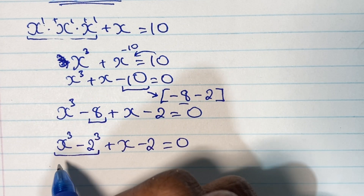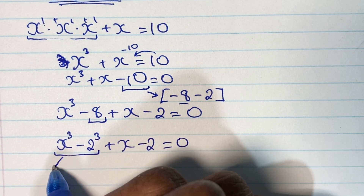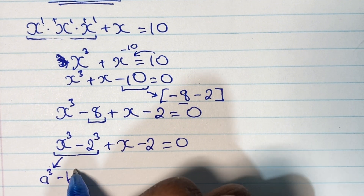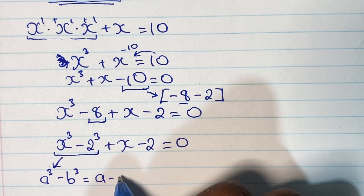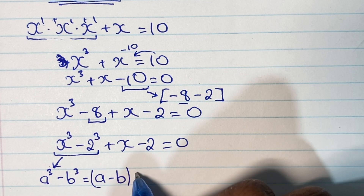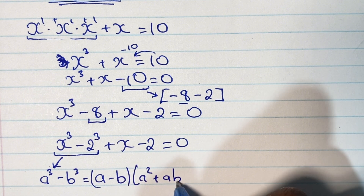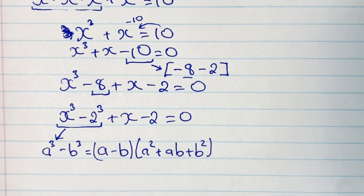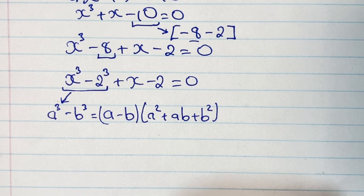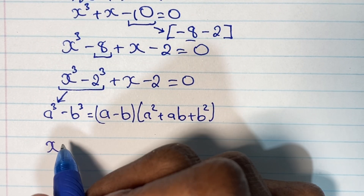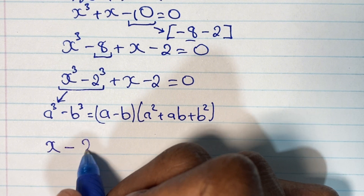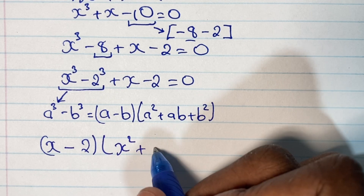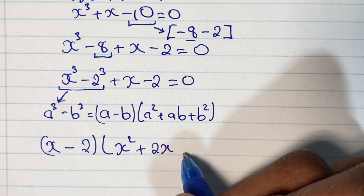We have x cubed minus 2 cubed, which is an example of the difference of two cubes. The rule states that a cubed minus b cubed can be expanded as a pair of double brackets: (a minus b) times (a squared plus ab plus b squared). So x cubed minus 2 cubed becomes (x minus 2) times (x squared plus 2x plus 4).